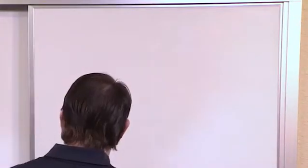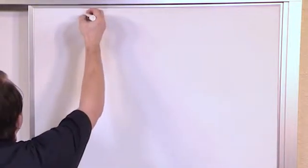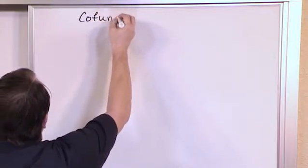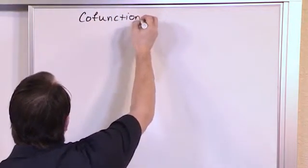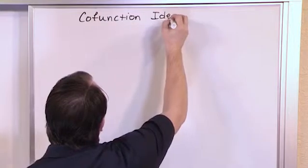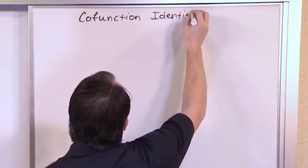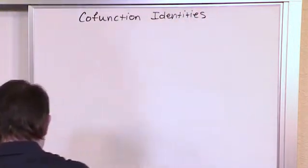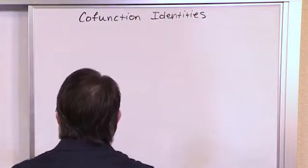So first of all, before we talk about anything, I think it's better to go ahead and write them down because I think it's going to make a little more sense to you. So these are called the cofunction identities. And I'll explain what cofunction means in a second.